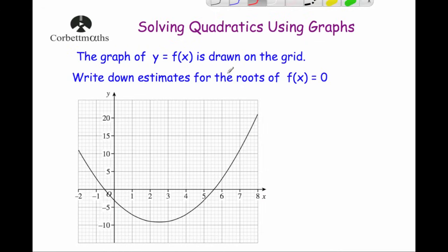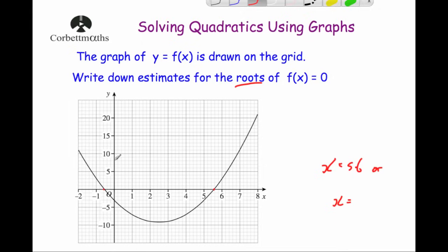The next example changes the wording slightly: the graph of y equals f(x) is drawn on the grid — we don't even know the equation. We're asked to write down estimates for the roots of f(x) equals 0. 'Roots' just means the solutions. Since f(x) equals 0 means y equals 0, we just find where the graph crosses the x-axis, giving x equals approximately 5.6 and x equals approximately minus 0.6.